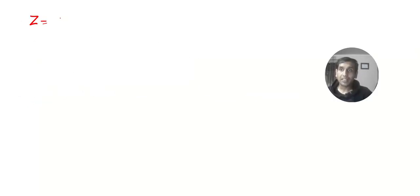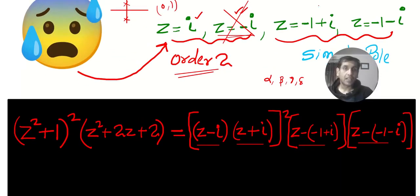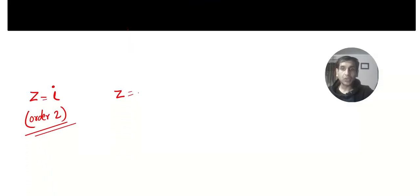Now one more thing. z equal to i means 0, 1. That is above the x axis. z equal to minus i, I am going to ignore because it will be below the x axis. We have to consider the singularities above the x axis. We got two more poles here. Minus 1 plus i will be minus 1, 1. So this will be above. Minus 1 minus i will be minus 1, minus 1. So we have to find the residues at z equal to i and z equal to minus 1 plus i.